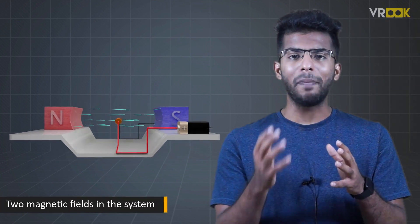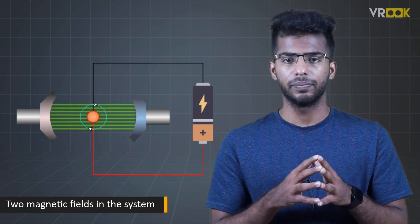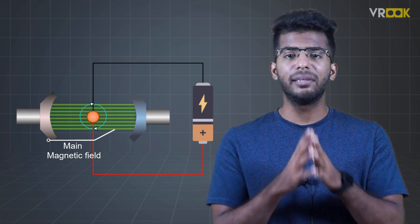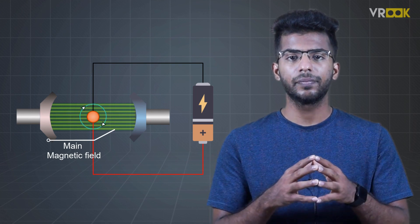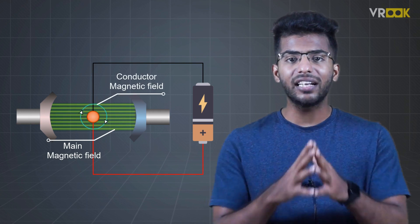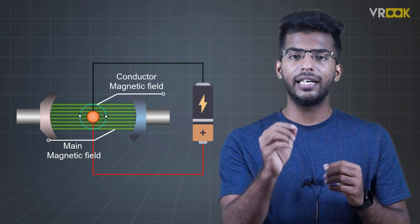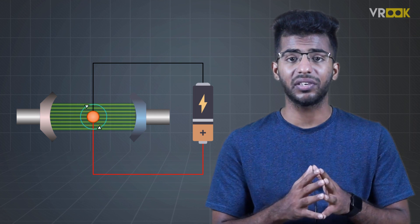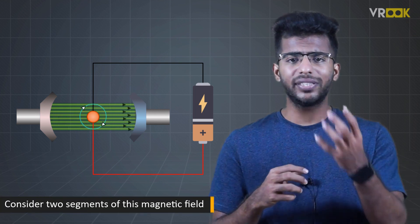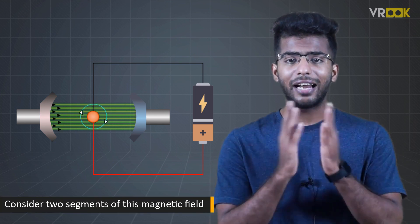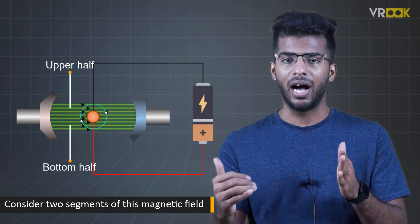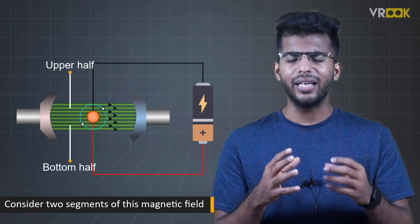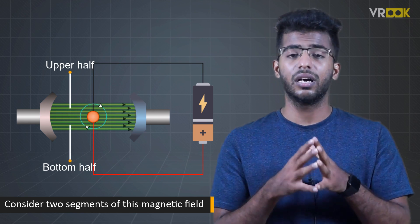Now, we have two magnetic fields in the system. The first one is the main magnetic field generated by horseshoe magnet and the second the magnetic field due to the current carrying conductor. Now, it gets interesting. If you consider two segments of this magnetic field around the conductor, that is the upper half and the bottom half, we can understand why the conductor experiences a force.